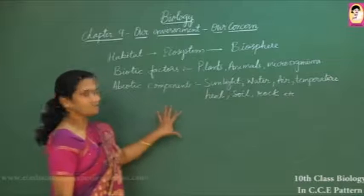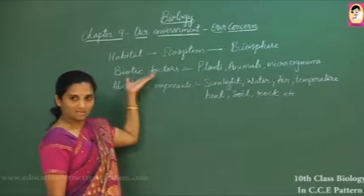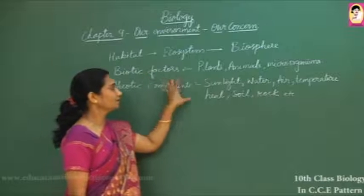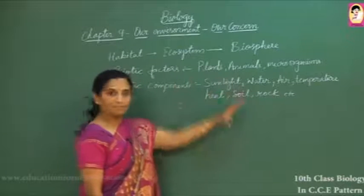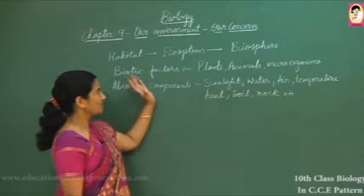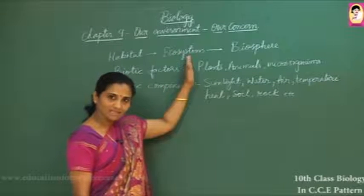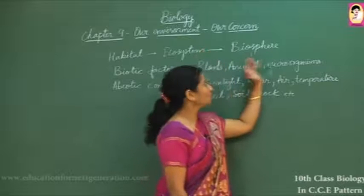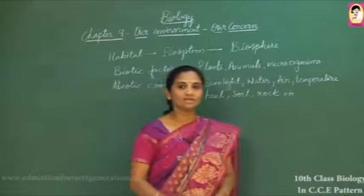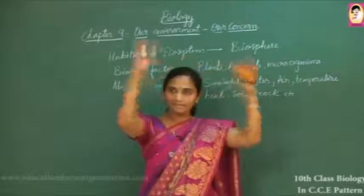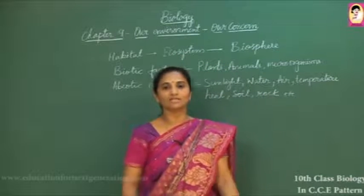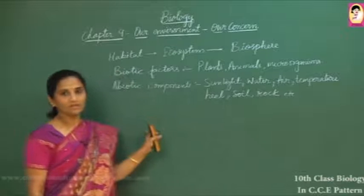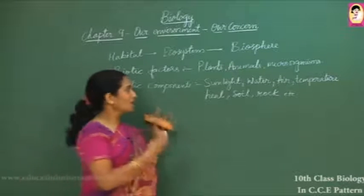An environment is considered one where both biotic and abiotic factors are together. Such a place is called a habitat. Where many habitats are present, we call it an ecosystem. Where many ecosystems are present, we call it the biosphere — which considers the entire planet and all living organisms on it.